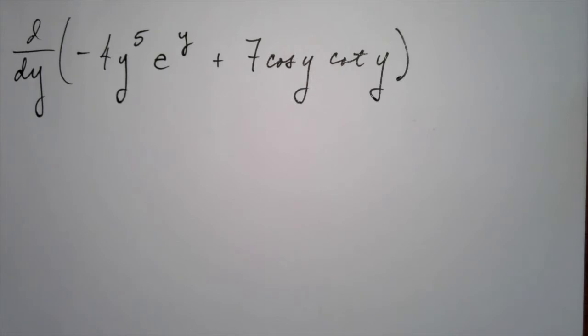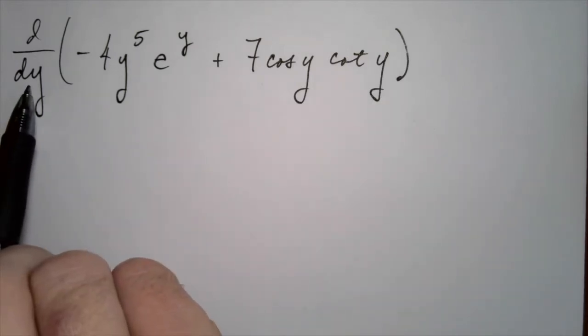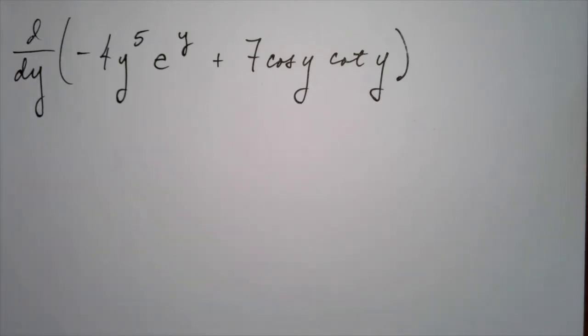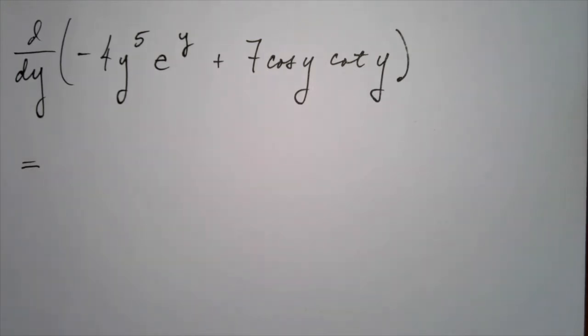Let's compute some more derivatives. Let's take the derivative of minus 4y to the fifth e to the y plus 7 cosine of y cotangent of y. Now we don't usually think of the input variable for a function as y, right? Usually x is the input, y is the output. But I just want to point out that these are arbitrary choices. We're certainly allowed to think of a function of y and to take the derivative with respect to y. As long as the derivative operator says we're taking it with respect to y, as long as it's d by dy, then that's perfectly reasonable.